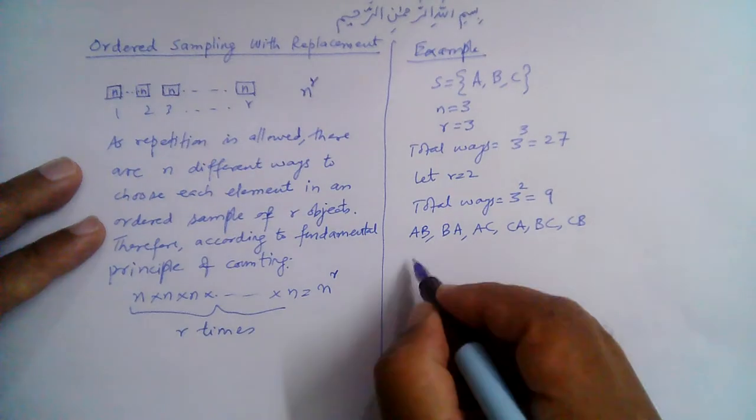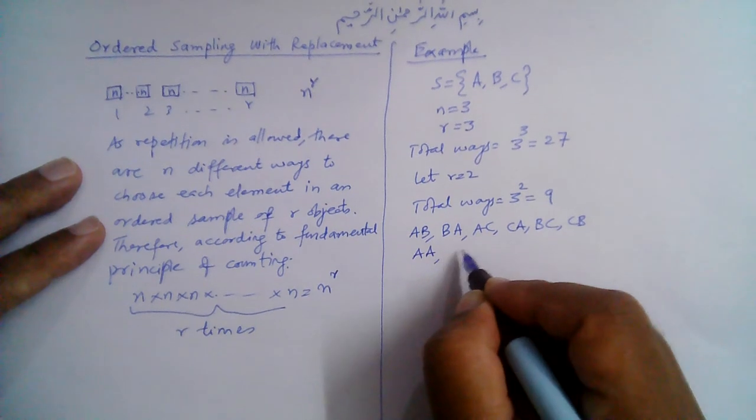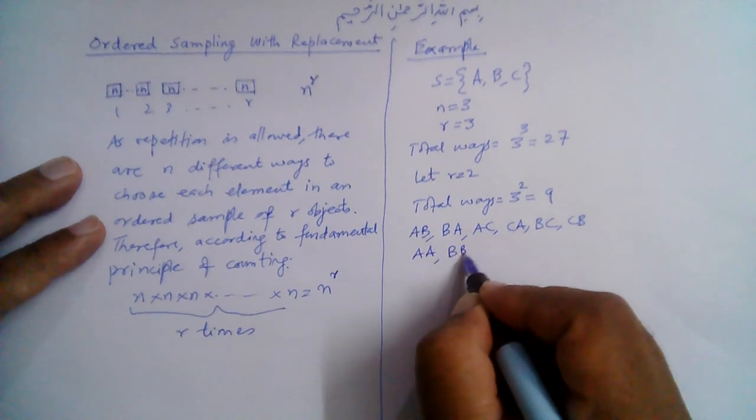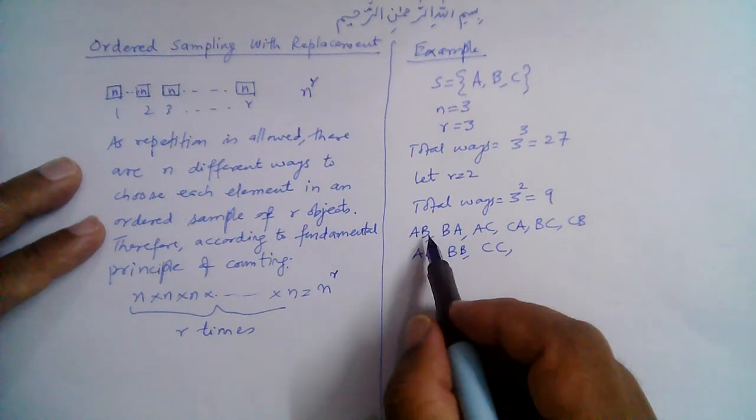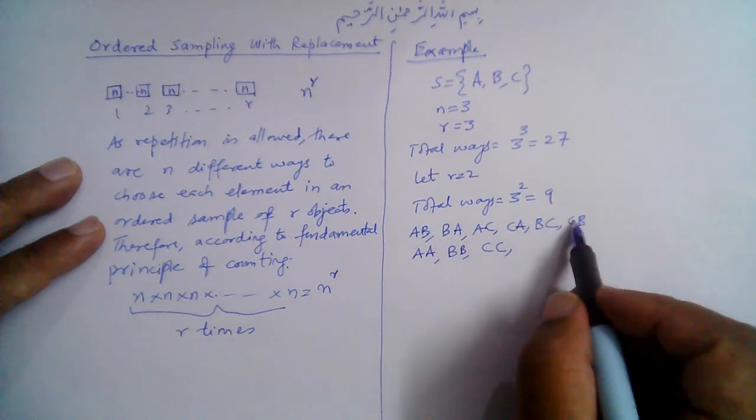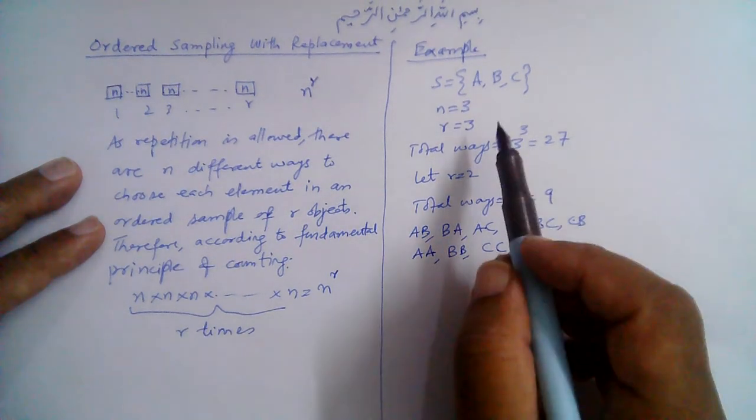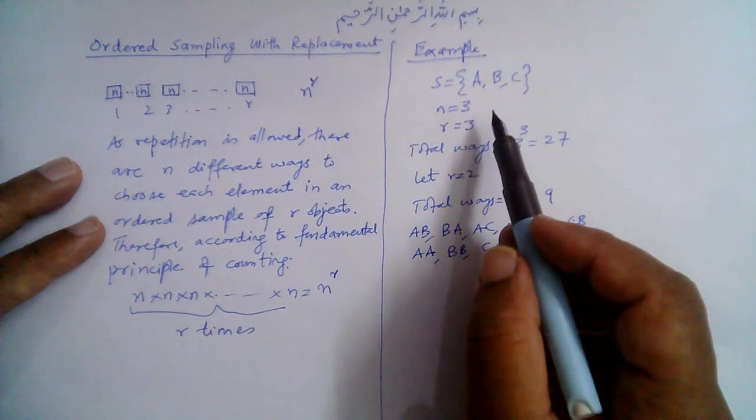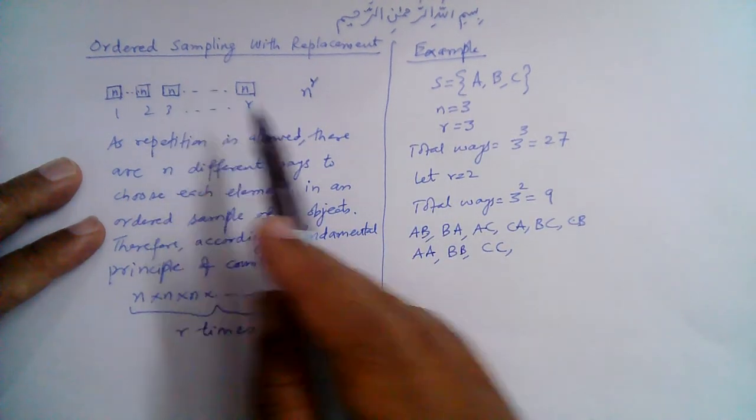But note that replacement is also possible. So if we choose A once, we can choose A again. Similarly, we choose B once, we can choose B again. Similarly, CC. So these are all 1, 2, 3, 4, 5, 6, 7, 8, 9, all possible ways in which two objects can be chosen from collection of these three things using ordered sampling with replacement.